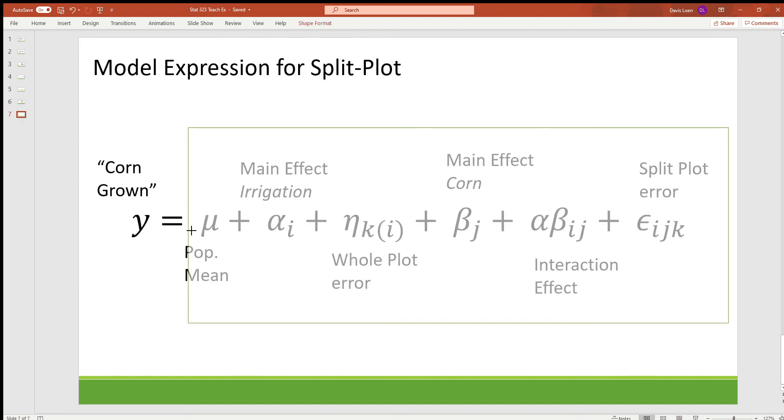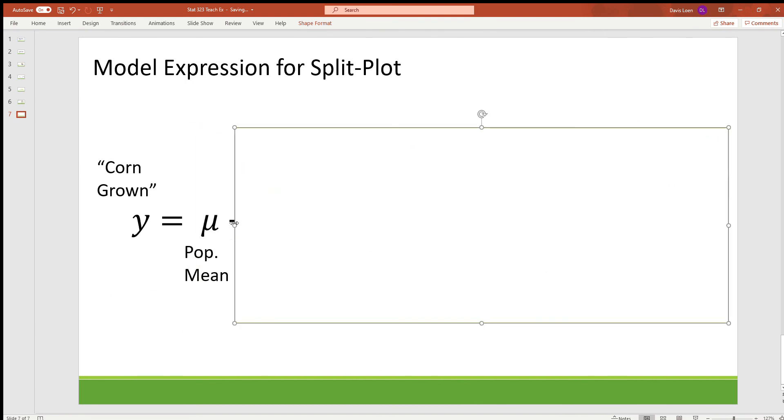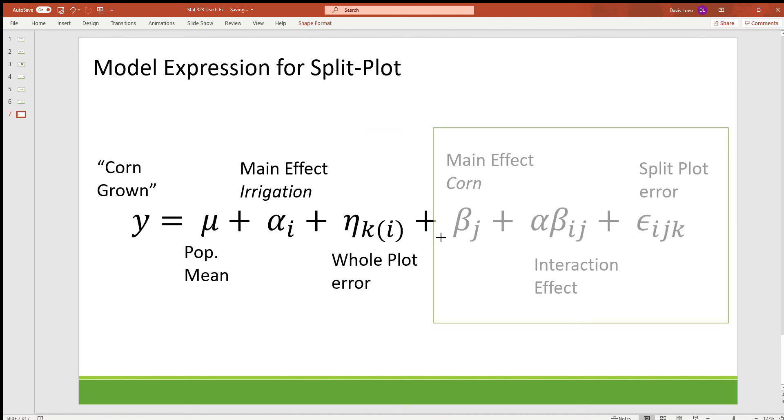So to do so, we're still interested in the corn that we've grown. We still have the population mean and we have the main effect of irrigation, but because we have the three whole plots as opposed to the 12 experimental units that we saw in CRD, we have a new term to account for the whole plot error. This accounts for the three whole plots that have their own levels of irrigation.